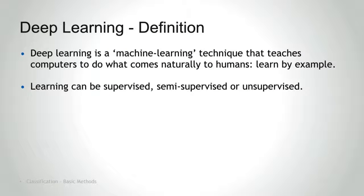Deep learning is an artificial intelligence function that imitates the workings of the human brain in processing data. Deep learning, which is also known as deep neural learning or deep neural network, is a subset of machine learning.